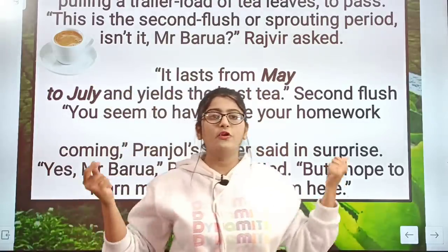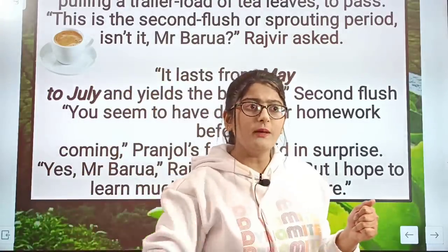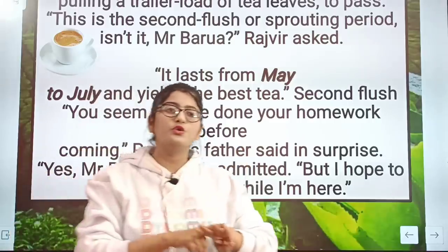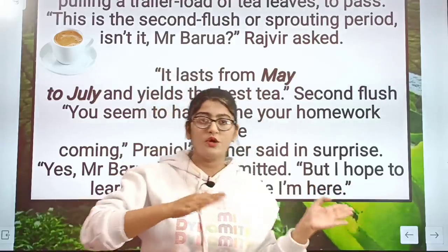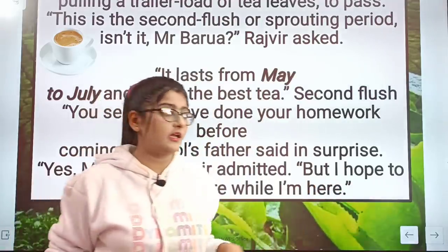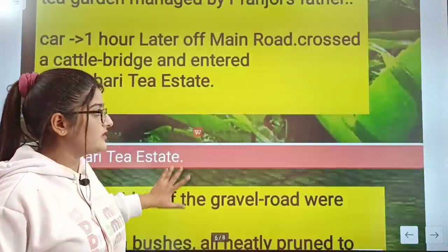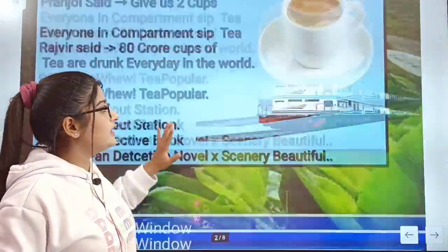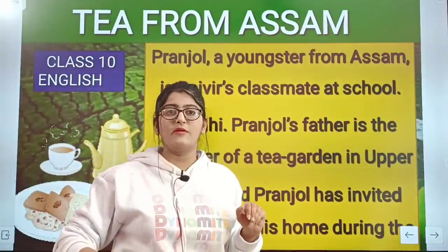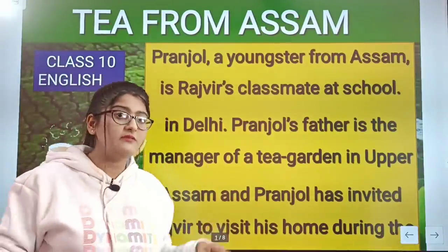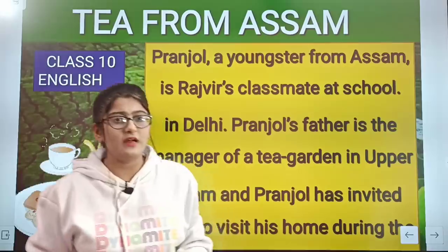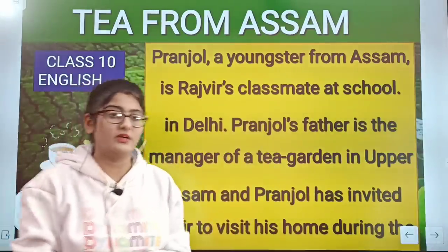With this, the chapter is fully complete — all three parts of 'Glimpses of India' are complete: Goa, Kutch, and Tea from Assam. I hope you understood this chapter well. I will meet you in the next video with the next chapter in detail. If you want the best notes for revision, the link is given to my Instagram ID in the description box, where you can access all the pages I have uploaded. For other Class 10 English chapters and science important questions, check the playlist. I will see you in the next video.